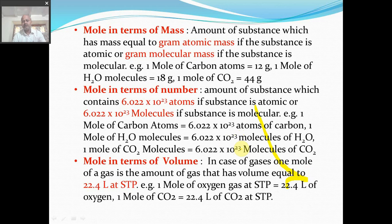Third definition: mole in terms of volume for gases. One mole of any gas is the amount whose volume is 22.4 liters at STP conditions — 273 Kelvin temperature and 1 atmospheric pressure (0°C and 1 atm). For example, one mole of oxygen gas at STP = 22.4 liters; one mole of carbon dioxide at STP = 22.4 liters.